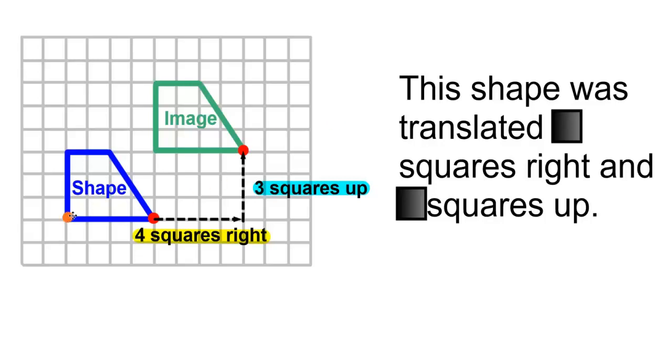We can do the same movement for all the vertices. Four squares to the right, three squares up. Four squares to the right, three squares up. And four squares to the right, and three squares up.